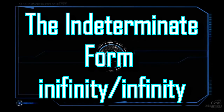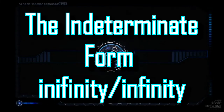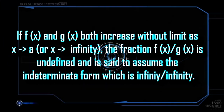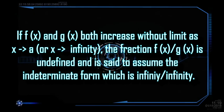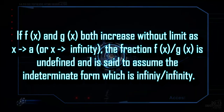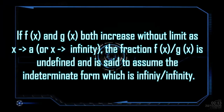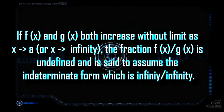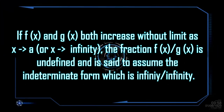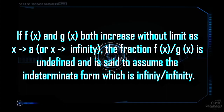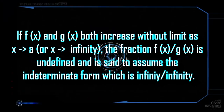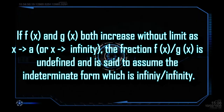Next is the indeterminate form infinity over infinity. If f(x) and g(x) both increase without limit as x approaches A, or x approaches positive or negative infinity, the fraction f(x) over g(x) is undefined and is said to assume the indeterminate form infinity over infinity.